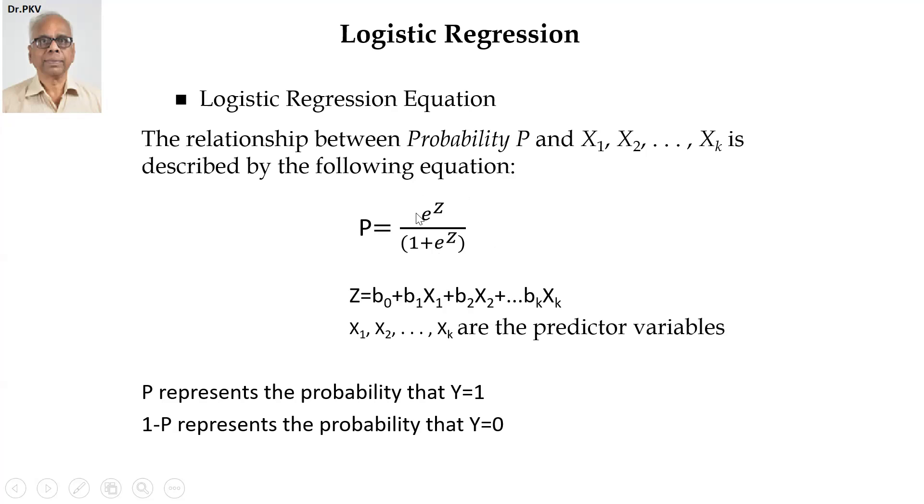And the numerator is the odds. The denominator is 1 plus odds. That's the beauty of the sigmoid function. And what is Z? Z is equal to B0 plus B1X1 plus B2X2, etc., plus BKXK. If there are K predictor variables in the equation of Z.